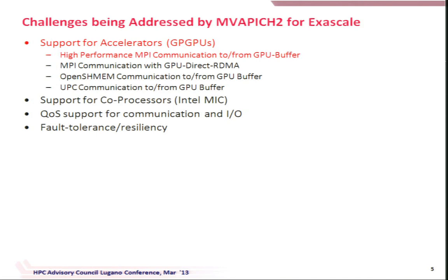I also introduced newer PGAS models like OpenSHMEM and UPC yesterday. Those programming models have the same challenges — it's not just MPI. If you are trying to use OpenSHMEM or UPC, how do you move data from GPU buffer to GPU buffer? I'll focus on this as well.